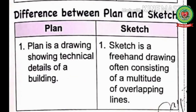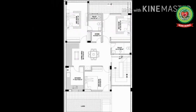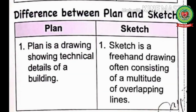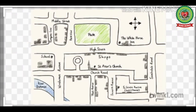Now the difference between plan and sketch. Plan is a drawing showing technical details of a building — a layout of a new house will show the length and breadth of each room along with the height of its walls and windows, so it is drawn on a large scale for better clarity. Sketch is a freehand drawing often consisting of a multitude of overlapping lines — here multitude means group and overlapping means to cover. In simple words, sketch is a rough layout of a place without using a scale.